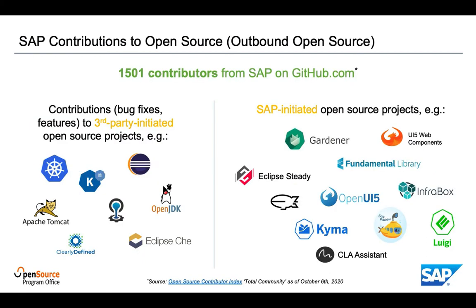Contributions to open source from SAP come in three major forms: either as bug fixes or features to open source projects that had been initiated by third parties. Here on the slide we have depicted just some of the projects that SAP is contributing to in this form, like for instance Kubernetes, Cloud Foundry, or clearly defined. On the other hand, we have those open source projects which are initiated by our SAP development teams and also mainly driven by them, together with contributions from our partners in the open source community.